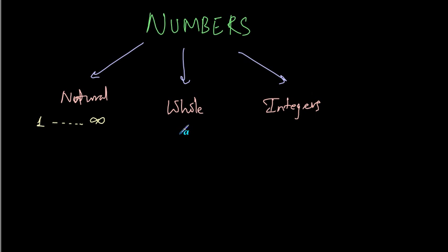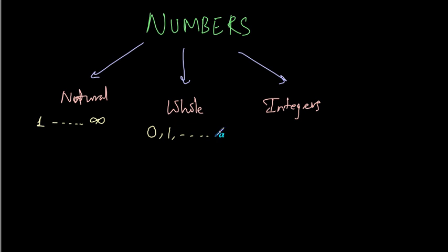If you add 0 to natural numbers, then those set of numbers become whole numbers. So, whole numbers are 0, 1, and all other natural numbers.